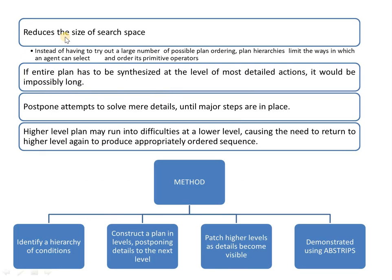This procedure reduces the search space, and the entire plan has to be synthesized at the level of the most detailed actions. If I explain everything at a single level that will be impossibly long. So I am converting or dividing those steps into different layers or levels. The method is: identify the hierarchy or order of conditions, construct a plan in levels by postponing details to the next level, with the most important tasks in the preliminary levels and least important tasks postponed. Patch the higher levels as detail becomes visible, and work out the higher levels first.